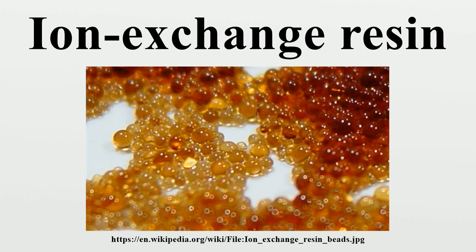Ion exchange processes are used to separate and purify metals, including separating uranium from plutonium and other actinides including thorium, and separating lanthanides such as lanthanum, neodymium, erbium, samarium, and lutetium from each other and from other lanthanides.